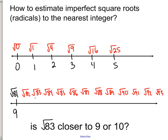I just need to get a clear understanding of, is radical 83 closer to 9 or is it closer to 10, which wouldn't even show on this screen. And obviously, the answer would be 9.